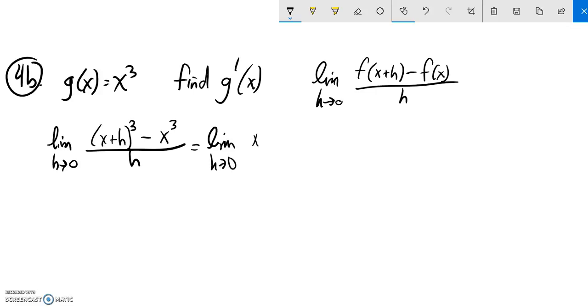It's the first one cubed, plus three times the first one squared times the second one, plus three times the first one times the second one squared, plus the last one cubed. And notice that's minus x cubed over h.